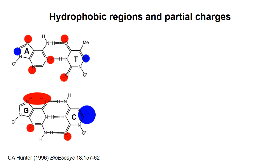Bases have partial charges on certain groups, and these partial charges are represented in this diagram. The strength of base stacking interactions depends on how the partial charges and the hydrophobic regions interact with each other. This diagram helps show why the GC-GC dinucleotide has a different stacking energy than the CG-CG dinucleotide.